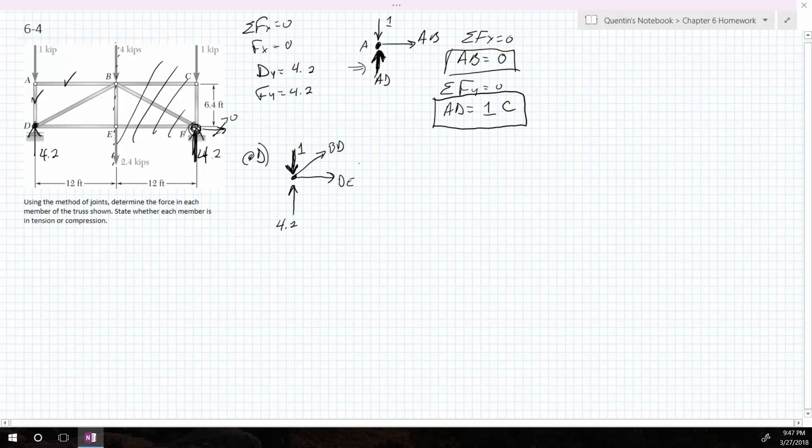Okay, so you'll notice both of them have forces in X, but only BD has a force in the Y. So I'm going to start with sum of my forces in Y equals zero. So what's that going to tell me? The way I drew it, the ups equals the downs. So 4.2 plus BD in the Y is equal to 1.